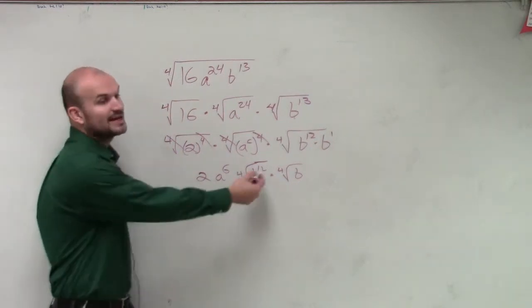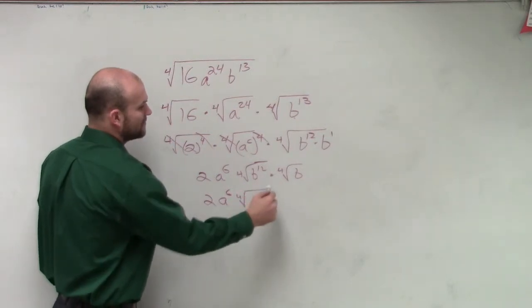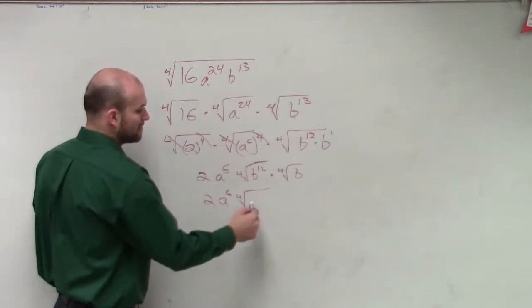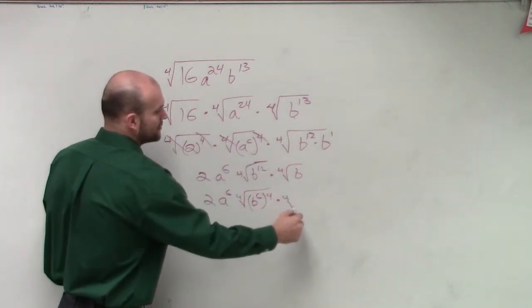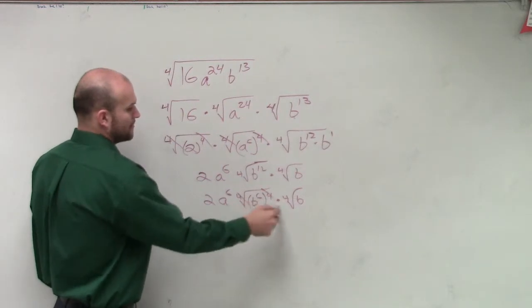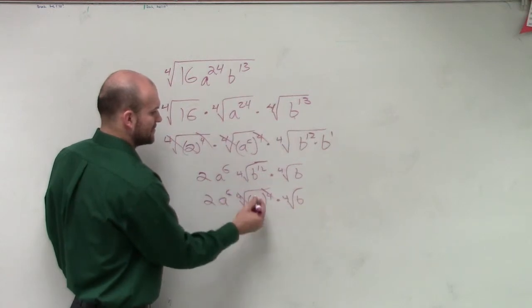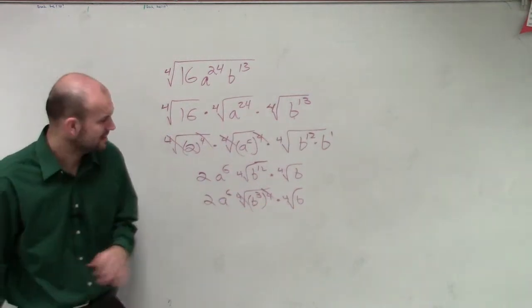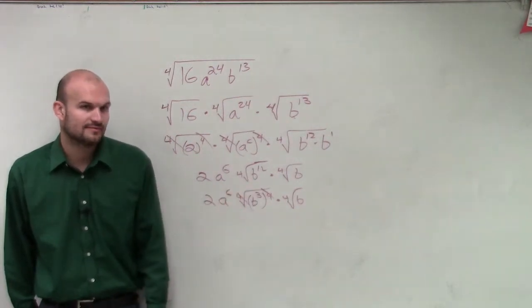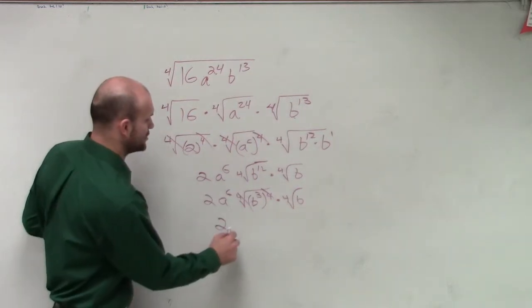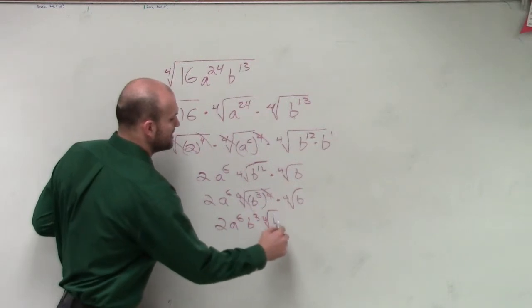Right, well I'm not done yet. So yes, we got to simplify this, right? So therefore we say 2, a to the 6th, 4th root of, and then we can rewrite this as to the 4th power, so we could write b to the 6th to the 4th times the 4th root of b. B to the 3rd. B to the 3rd. Yes, to the 3rd. Thank you. I don't know why I was thinking 6. So therefore, now we can simplify those and we say 2, a to the 6, b cubed, and the 4th root of b.